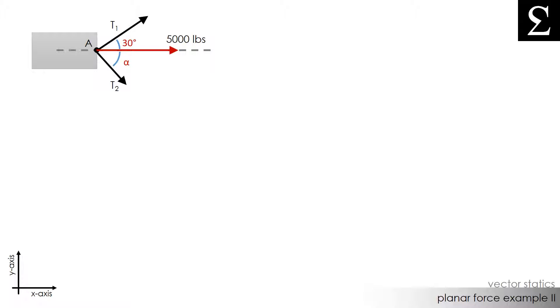The angle that tension force T1 makes with the horizontal is 30 degrees above, and the angle of tension force T2 makes with the horizontal is an angle alpha below the horizontal. We want to first find the two tension forces T1 and T2 that make up the resultant force. It is given that angle alpha is 45 degrees.